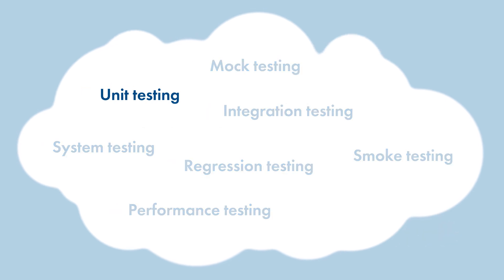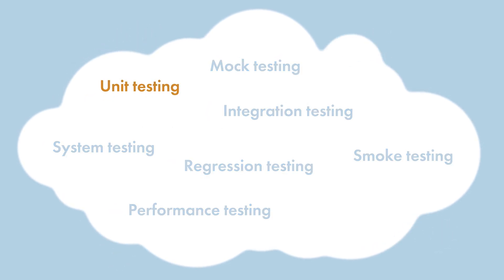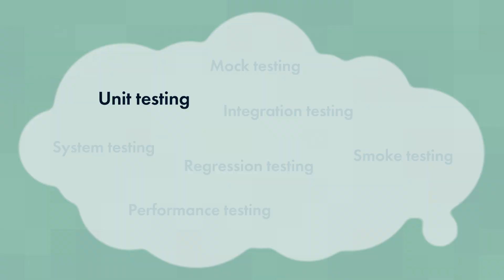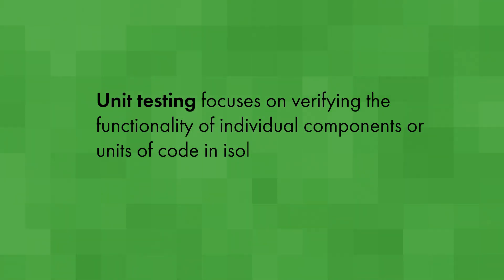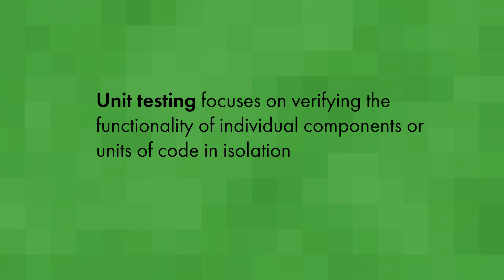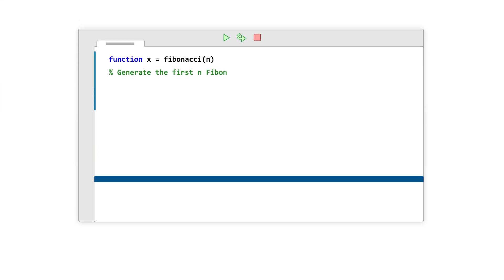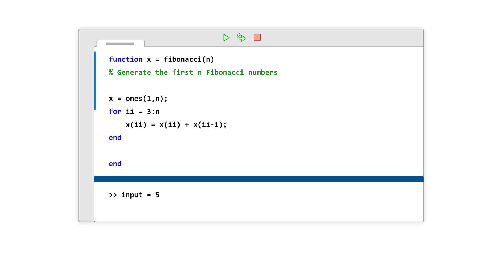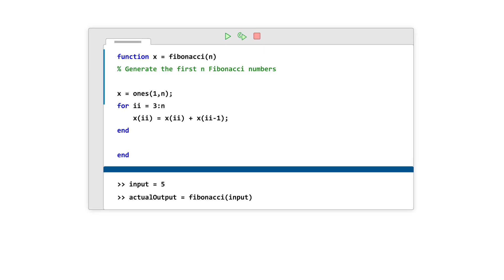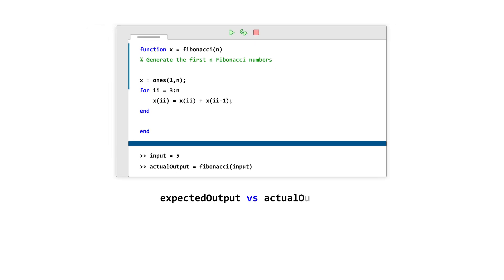We'll start with what is probably the most common type of software testing, called unit testing. Unit testing focuses on verifying the functionality of individual components or units of code in isolation. An example unit test would take an individual function or method, like this Fibonacci function, and provide its sample inputs, then compare the actual output with the expected output given those inputs. This particular unit test would also be a form of regression testing, which we'll talk about a little later.